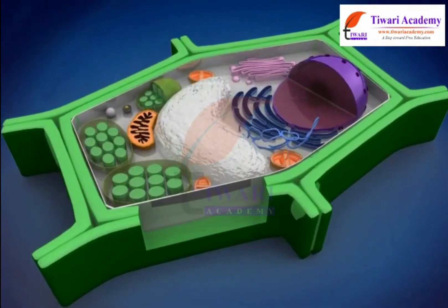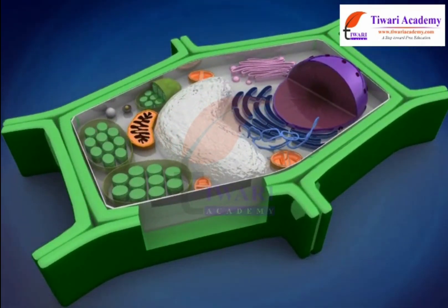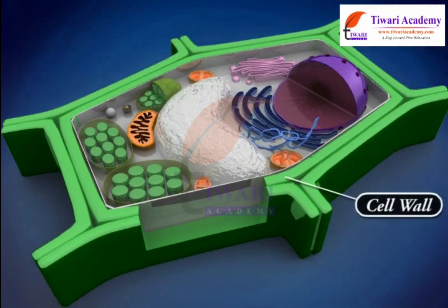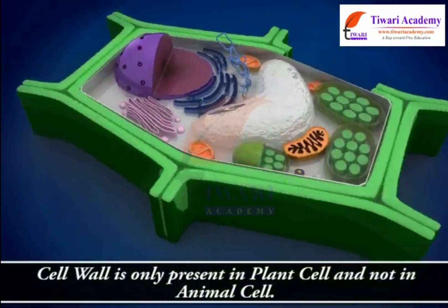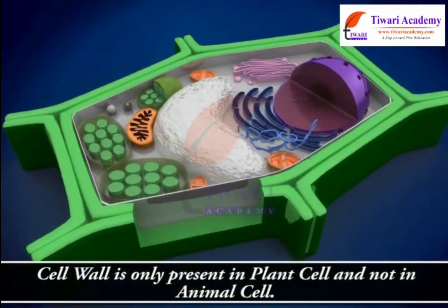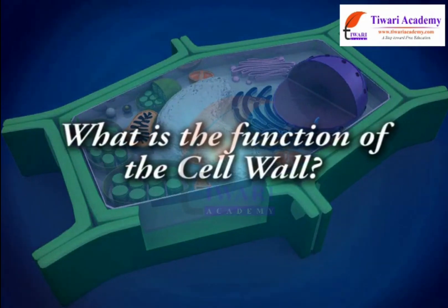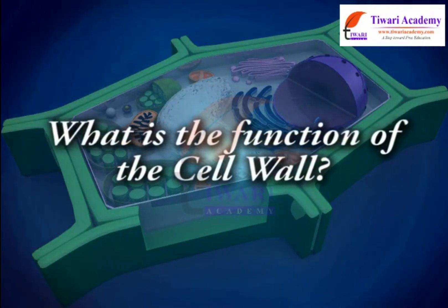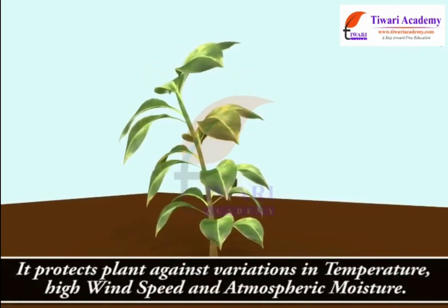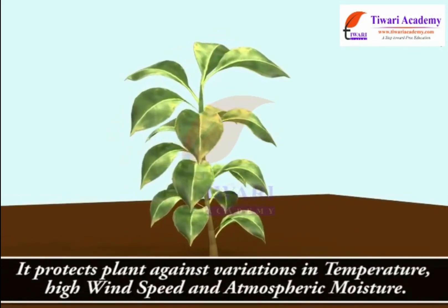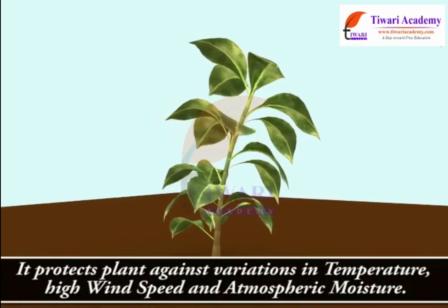In plant cells, there is an outer thick layer called the cell wall. The cell wall is only present in plant cells and not in animal cells. Its function is to protect the plant against variations in temperature, high wind speed and atmospheric moisture.